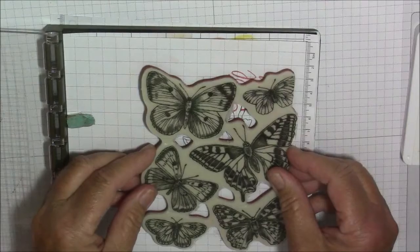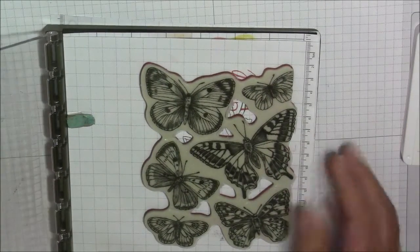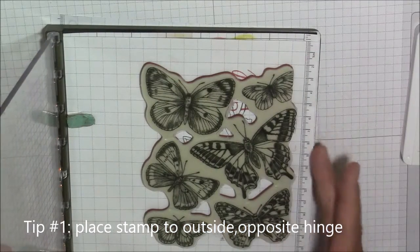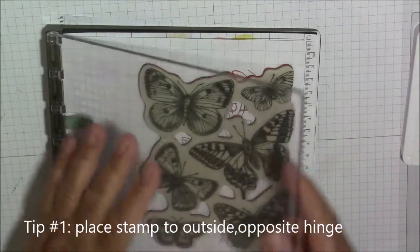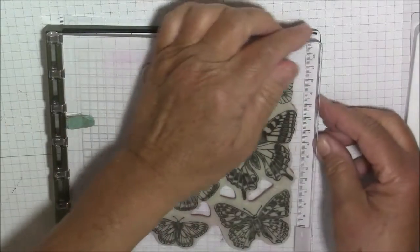We're going to put this down here where we want it to stamp. My first tip is to put it to the outside of your Stamparatus, the farthest you can from the hinge. Go ahead and mount your stamp onto that.